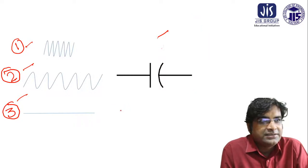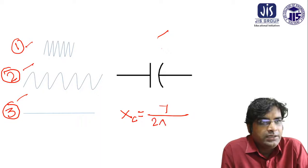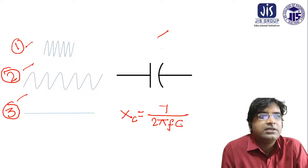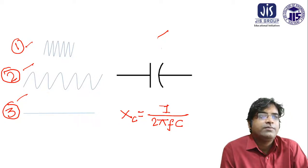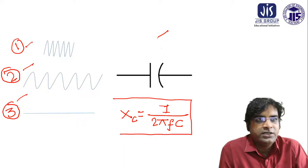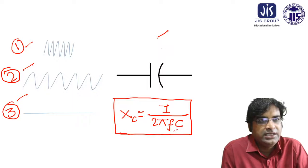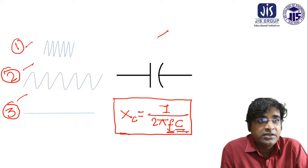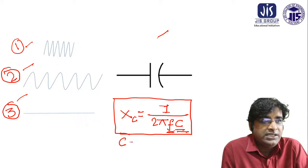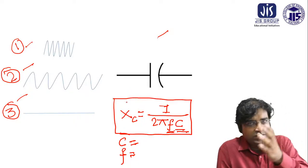We already know that XC equals 1 divided by 2πfC. This is the reactance for the capacitance. Here, C is the capacitive value and f is the frequency of the signal which is passing through this capacitance. So C is the capacitance and f is the frequency of the signal passing through this capacitance.